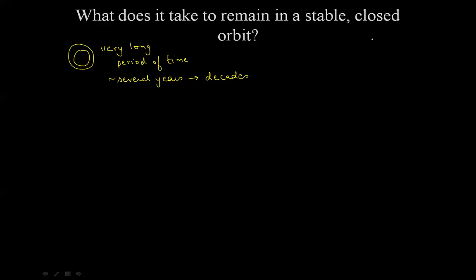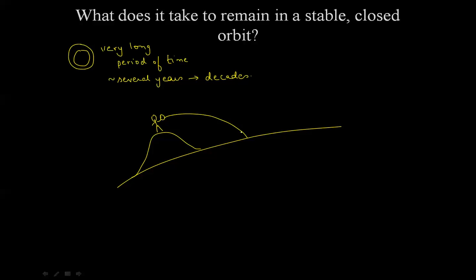So what does it take to remain in a stable, closed orbit? Suppose this is the surface of the Earth when viewed from far out, and this here is some mountain on which you are stationed, and you have in your hand a baseball. If you hurl that baseball off the mountain, where it will land depends on how hard you hurl it. The harder you throw it, the further it will land. Therefore, the range of the baseball is directly dependent upon how much energy you impart to it.